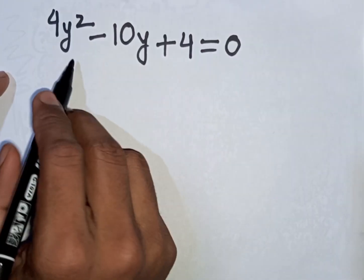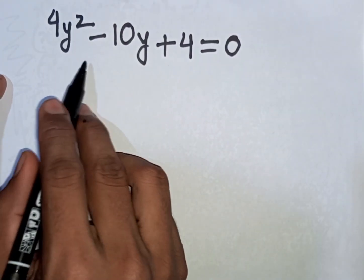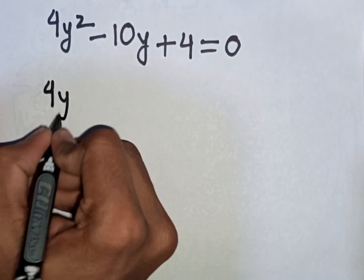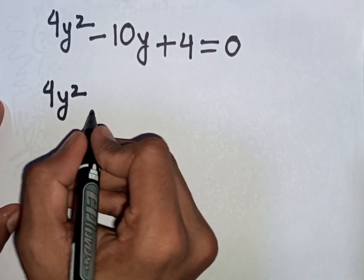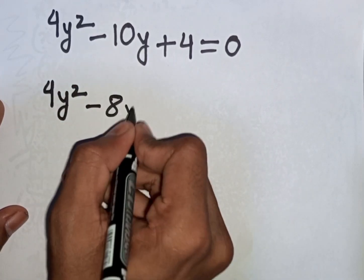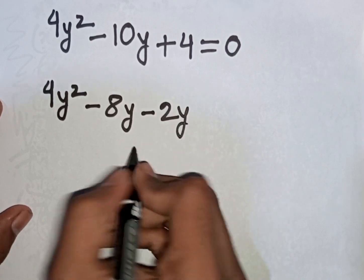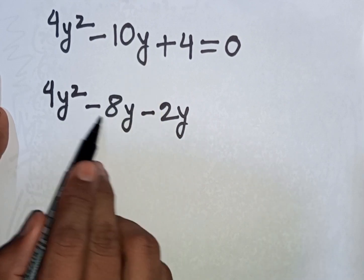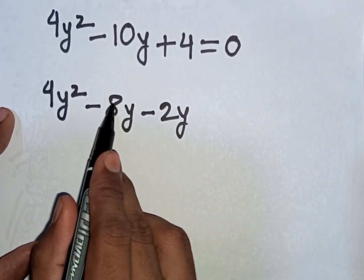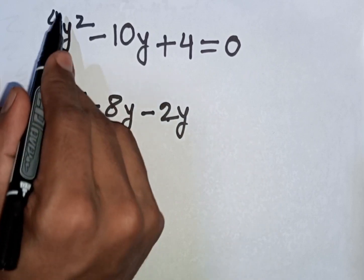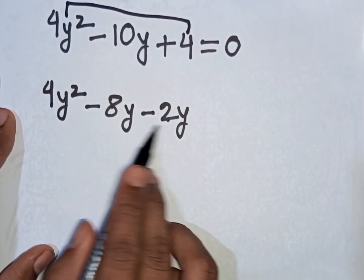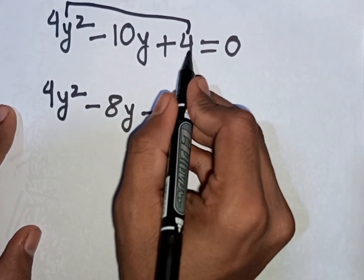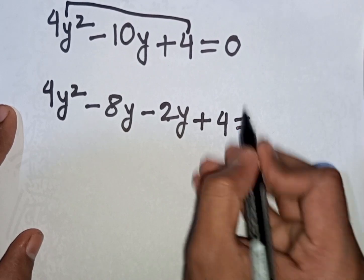We can apply the quadratic formula or middle term factorization. Using middle term factorization: 4y squared, then minus 10y is the same as minus 8y minus 2y. This is middle term factorization because minus 8y minus 2y equals minus 10y, and their product matches the required value. Then plus 4 equals 0.